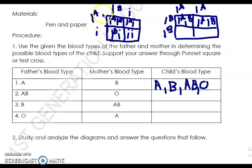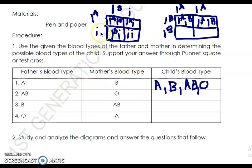For another possible combination: father type A uses IA i, and mother type B uses IB i. The offspring can be: IA IB — blood type AB; IA i — blood type A; IB i — blood type B; and small i, small i — blood type O. So very amazingly, if the father is type A and the mother is type B, you can get four possible blood types in the offspring. If you can solve number one, you can solve the rest of the problems.